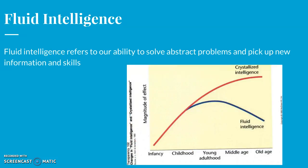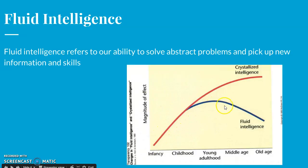The first type is called fluid intelligence. Think of fluid as something malleable, something that can move like a liquid. Fluid intelligence refers to our ability to solve abstract problems and pick up new information and skills. Looking at the graph, you can see that fluid intelligence declines as you get older.